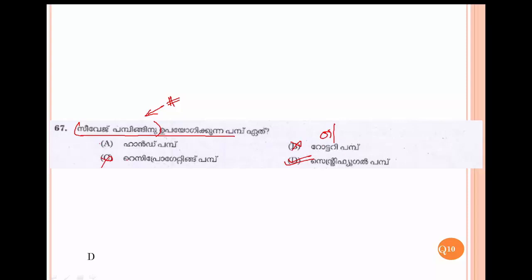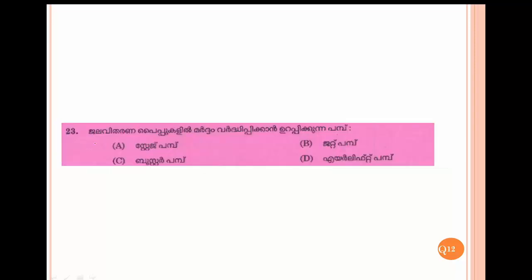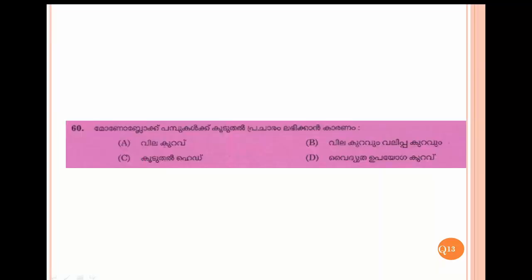Reciprocating pump — I would say this includes the hand pump. A reciprocating pump actually uses a one-way valve. Adding a sewage pump, the answer is D. If you have a sewage pump, you don't have a hand pump, a reciprocating pump, a compressed pump, or a rotary pump in that category.